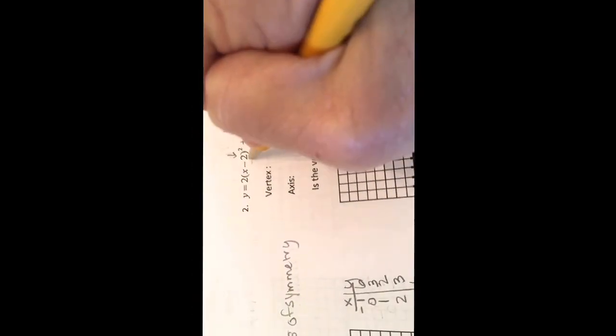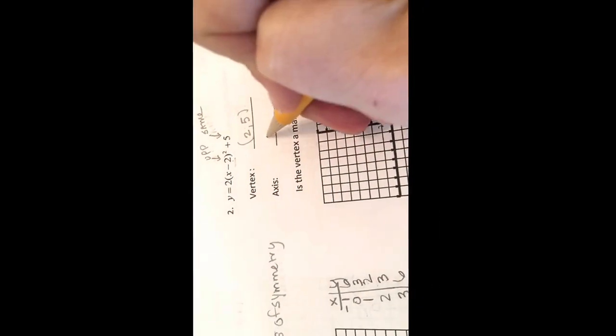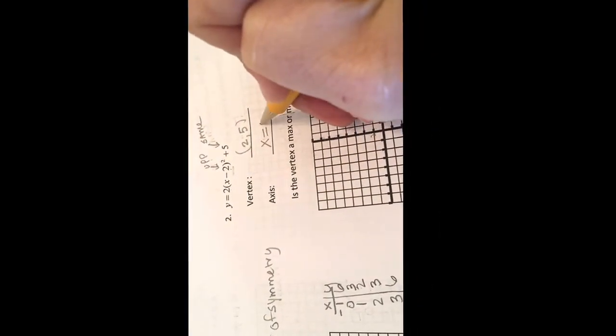Slide over to number 2. Again, vertex, vertex. Opposite, same. This is 2, 5.